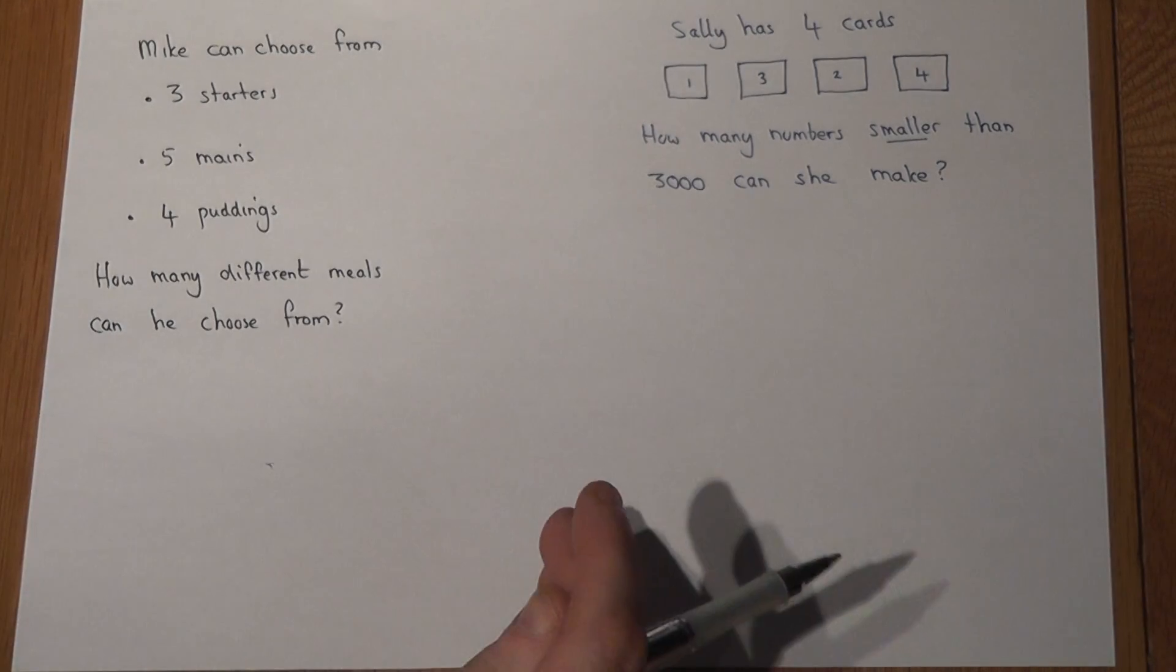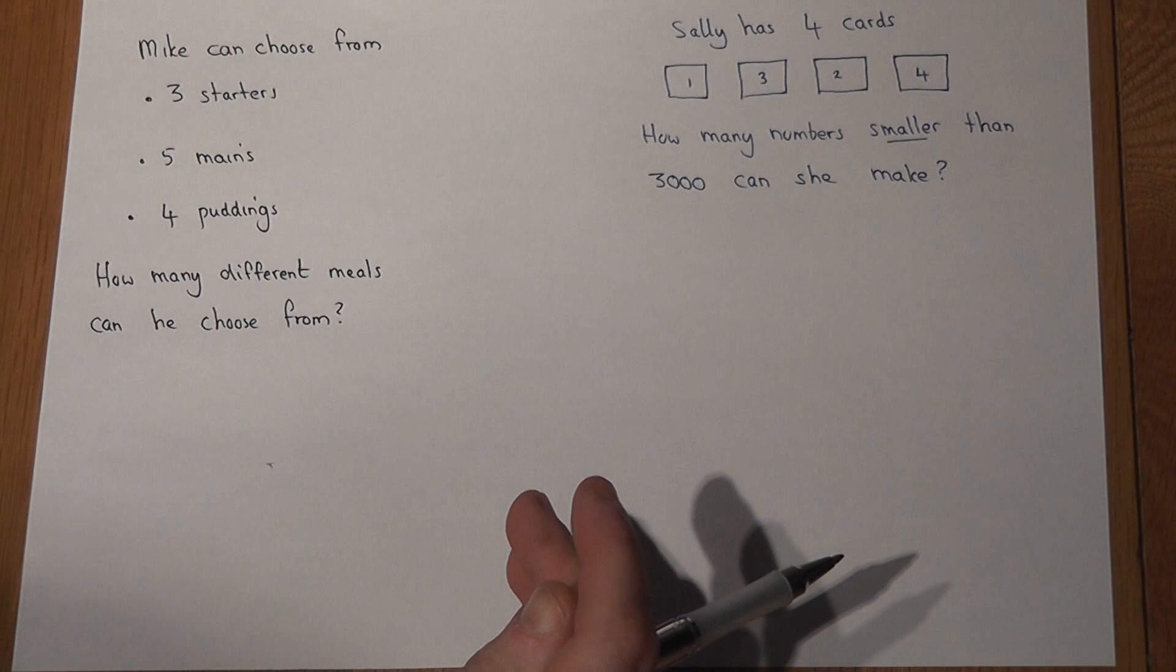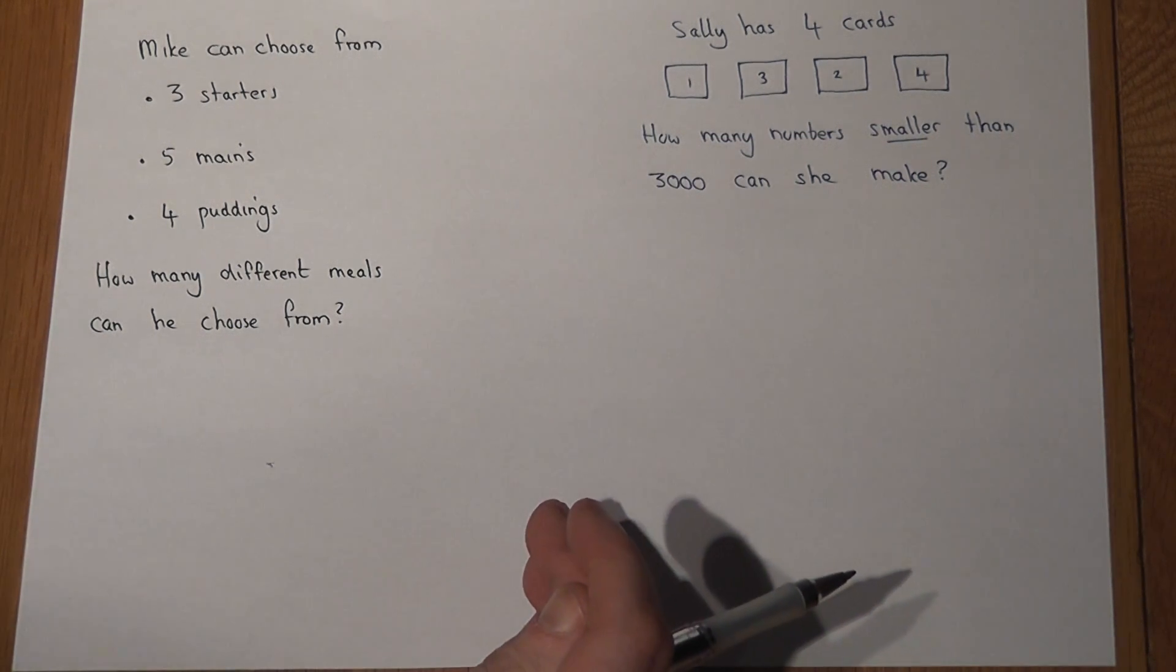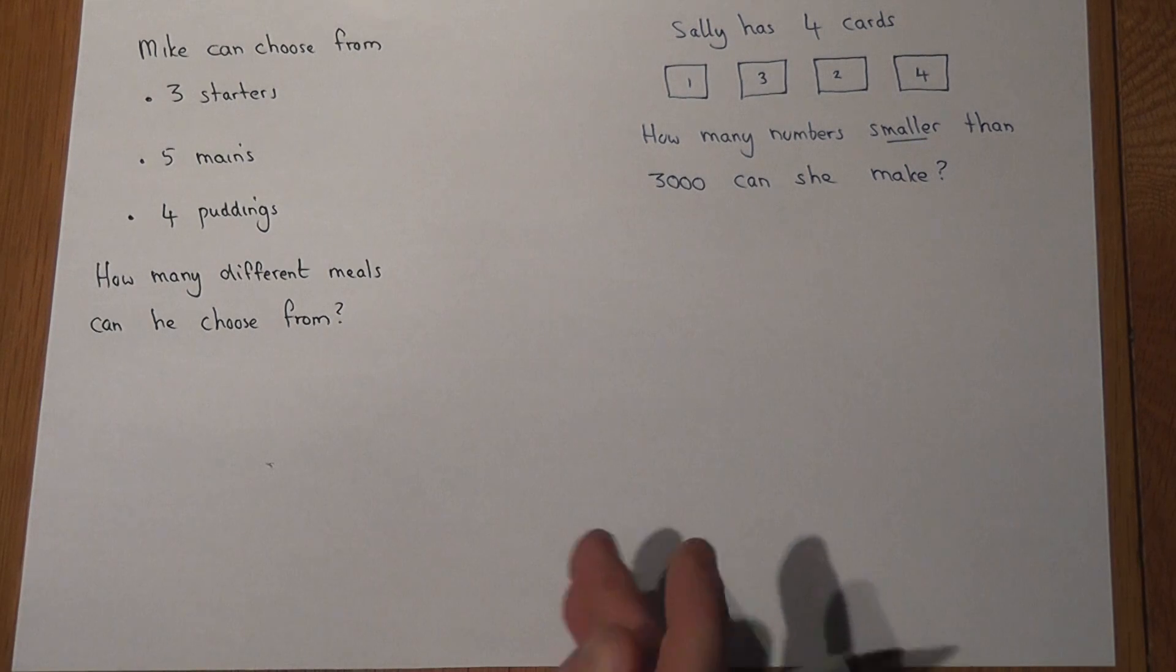This video revises a fairly simple concept about number of choices, which is still classed as being quite high-grade work, and we look at two quite distinct examples.